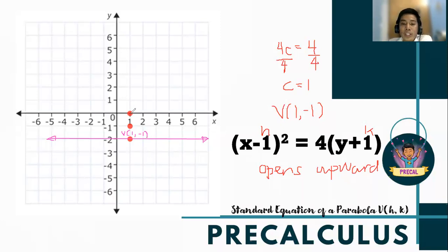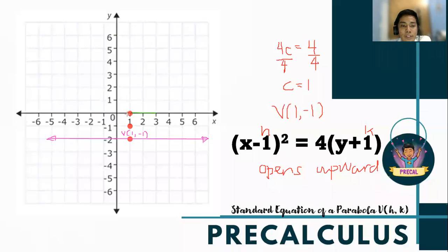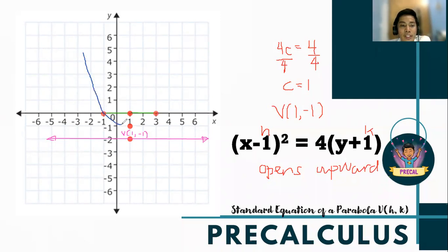From the focus, we now draw the length of the latus rectum. Since the length of the latus rectum is 4 units, we move 2 units to the left and 2 units to the right of the focus. Then let's determine the coordinates of the endpoints of the latus rectum so that we can connect these lines. Allow me to draw the curve now, connecting the endpoints of the latus rectum and the vertex to form a smooth curve.